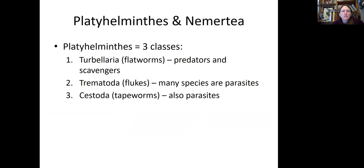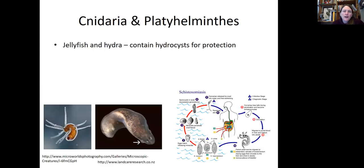Then I'm going to talk briefly about Platyhelminthes and Nemertea. The Platyhelminthes have organisms in three different classes: Turbellaria — the flatworms, which tend to be predators and scavengers; Trematoda — which are flukes, and many of these species are parasites, some human parasites; and Cestoda — which are tapeworms, also parasites. I'm going to have you watch the next video where I talk more about interactions between Cnidaria and Platyhelminthes.